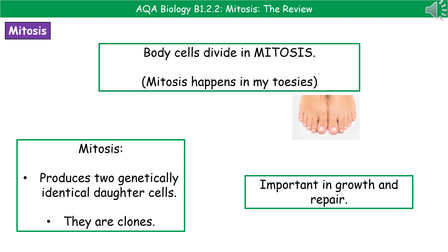At the end of mitosis, we generate two genetically identical daughter cells — we're creating clones of our parent cell. Mitosis itself is really important to us in terms of growth and repair.